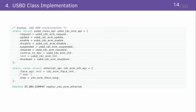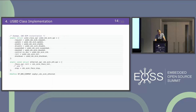Here's an example from CDC-ECM: you can see there is one API for the usbd_class_api structure and another one is the Ethernet controller driver API, because ECM emulates an Ethernet controller. So this implementation uses two APIs. The instantiation steps happen inside a large macro. For each instance, a descriptor is defined, string descriptors are instantiated, and finally the macro is used.